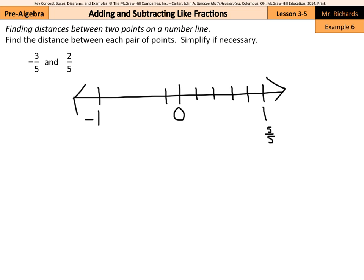Yeah, negative 1 fifth, negative 2 fifths, negative 3 fifths, negative 4 fifths, and negative 1, since negative 1 is negative 5 fifths. And so as I look to plot these, then, negative 3 fifths is here. While 2 fifths is right here.